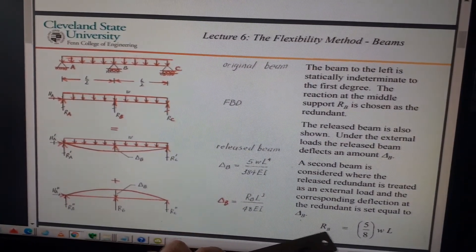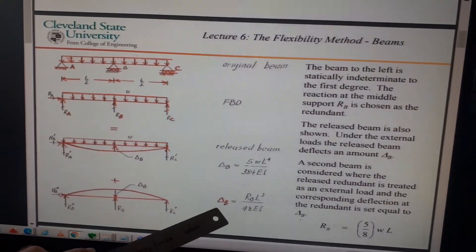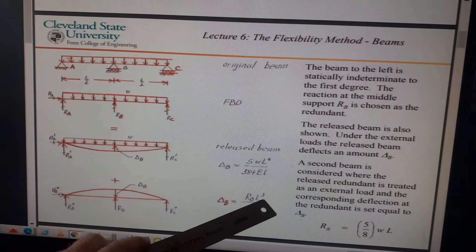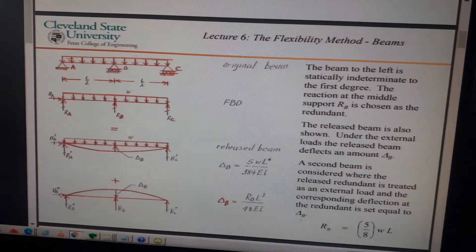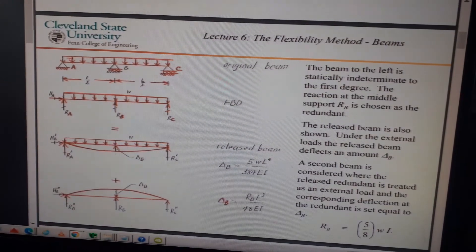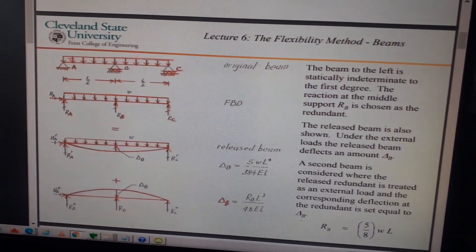A second beam is considered where the released redundant is treated as an external load, and the corresponding deflection at the redundant is set equal to delta_B. RB equals 5 over 8 WL. Because delta_B is RBL^3 over 48EI. I'll see you in part two - this video is already 10 minutes, but I'll finish this off in part two.